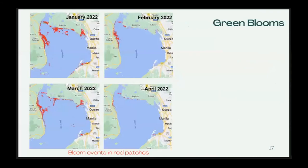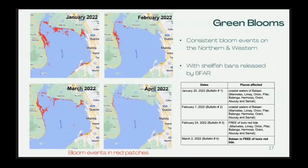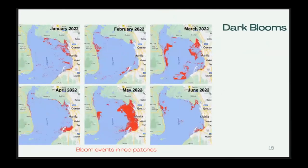For the green blooms, from January to April of this year, we detected consistent bloom events on the northern and western portions of the bay, shown as red patches. These are interestingly validated by shellfish advisories released by BFAR — the authority responsible for monitoring HABs — on those corresponding dates. For the dark blooms, we detected massive blooms in the western and eastern portions, especially in late months, which haven't been reported anywhere yet. We are still waiting for in-situ data such as actual shellfish bans, toxin levels, or chlorophyll data to further validate these findings.